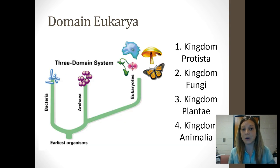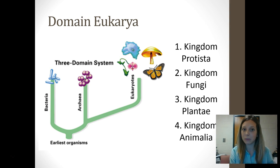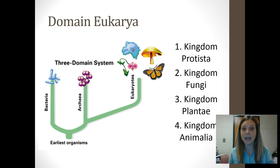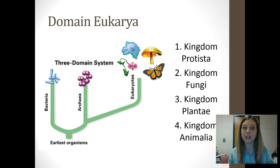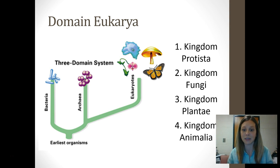We are looking now at the domain Eukaryote. Remember there are three domains: two that belong to bacteria, and the other has all of our eukaryotic organisms. The domain Eukaryote has four kingdoms that fall under it: Kingdom Protista, Kingdom Fungi, Kingdom Plantae, and Kingdom Animalia. We're looking at two of those kingdoms today — Protista and Fungi.